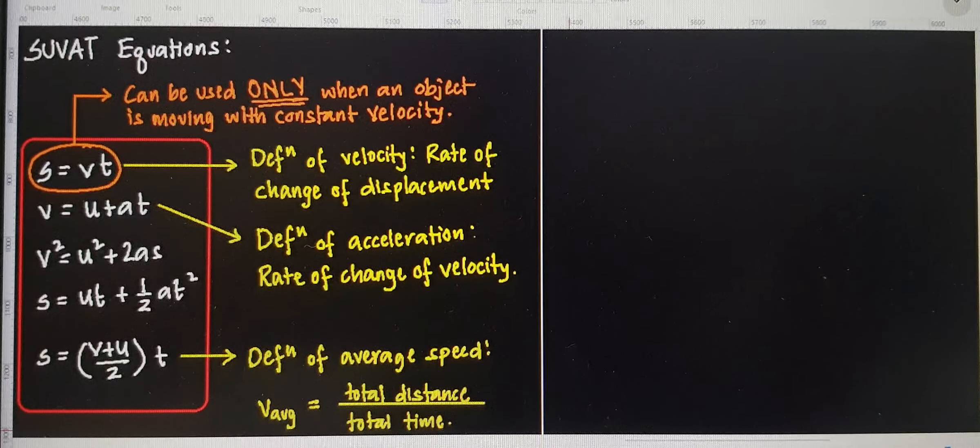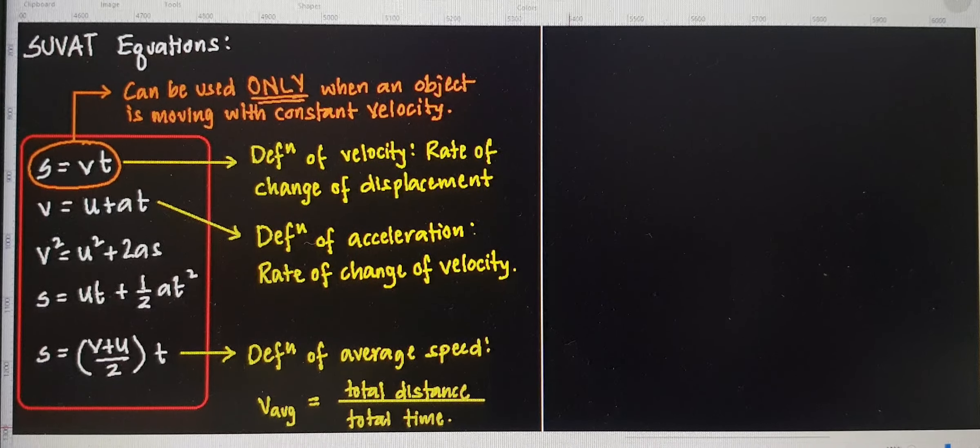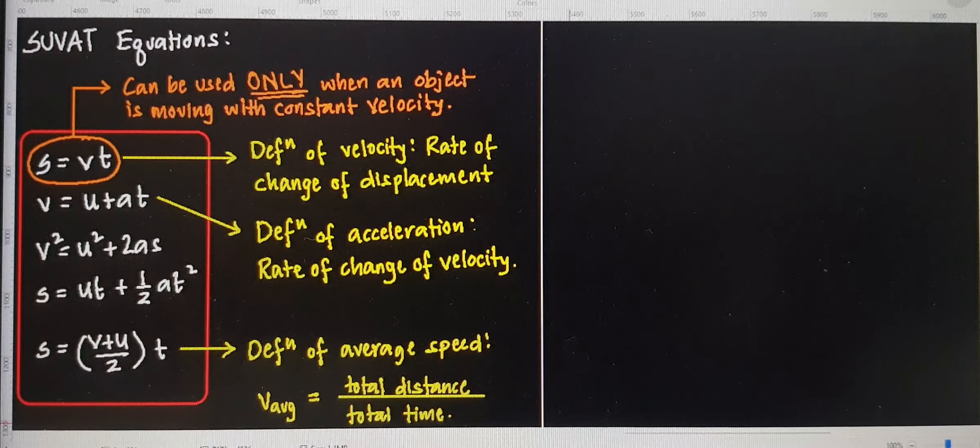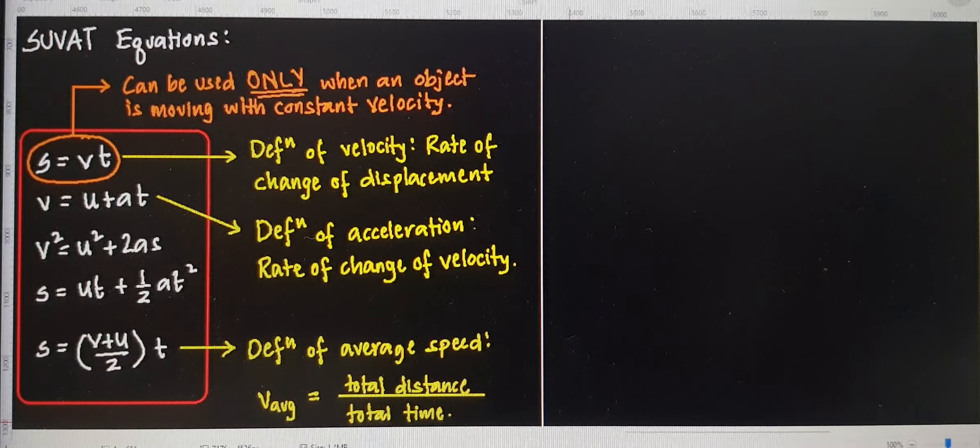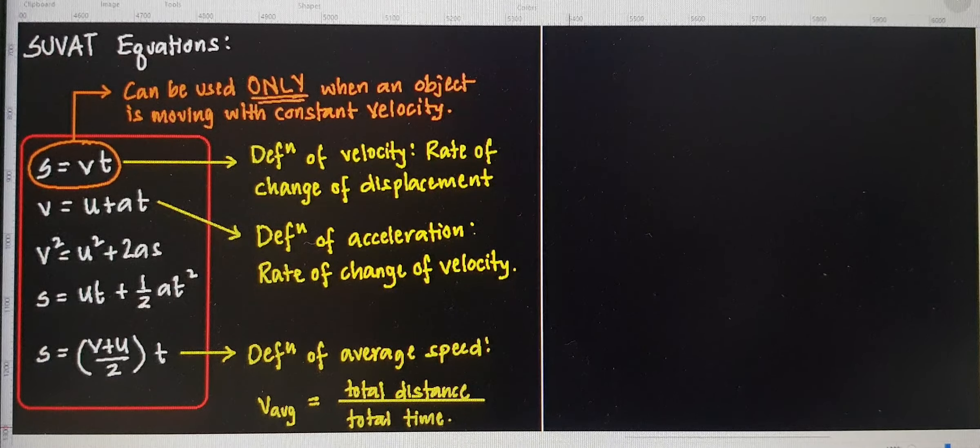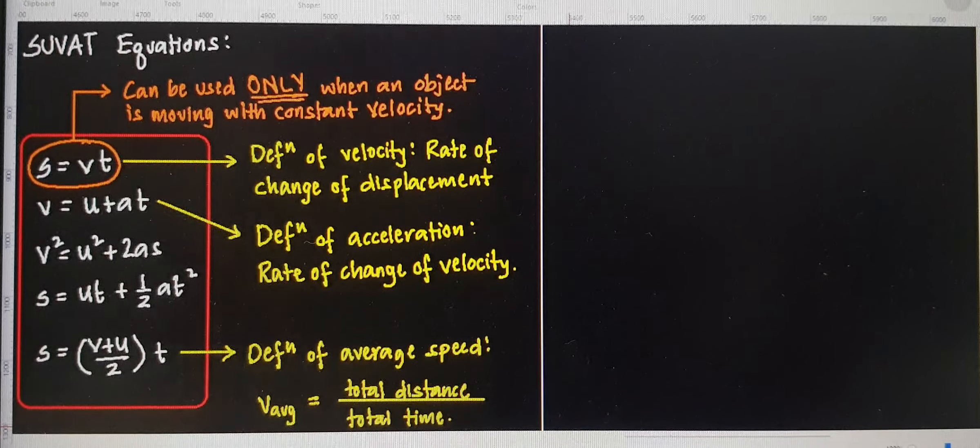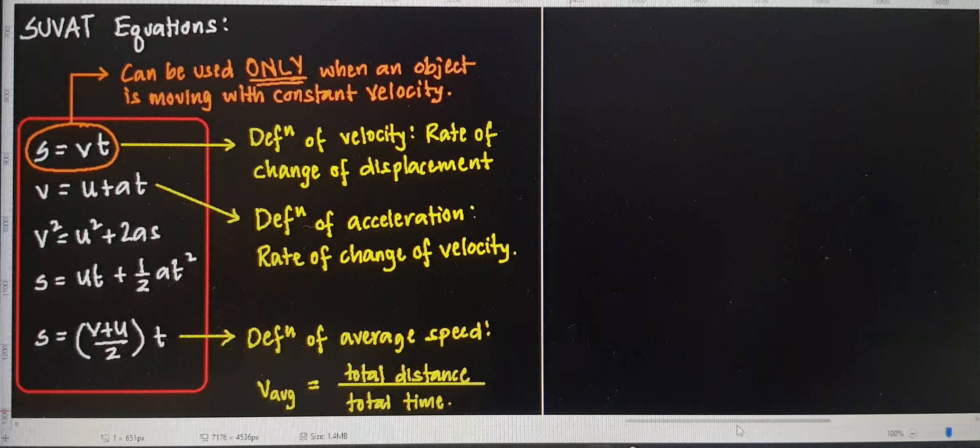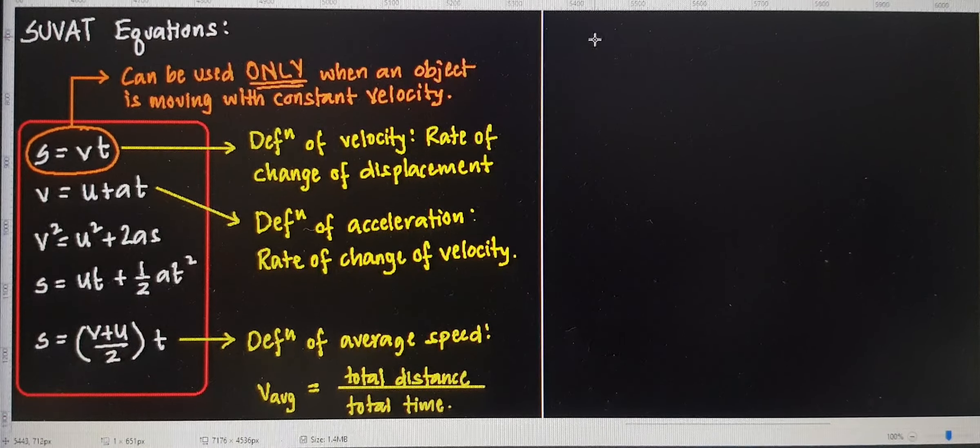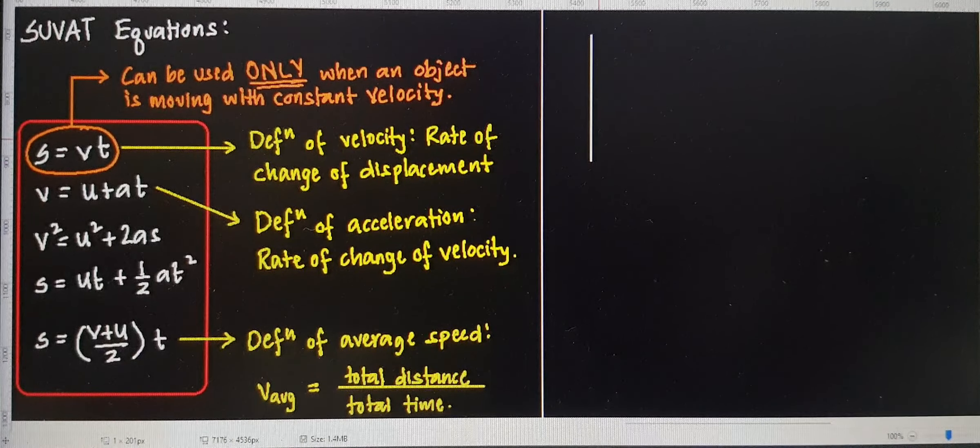As it burns fuel, mass keeps decreasing, so mass is not constant. It's burning fuel, mass keeps decreasing, so mass is not constant. Right? So SUVAT equations are very limited in their scope.